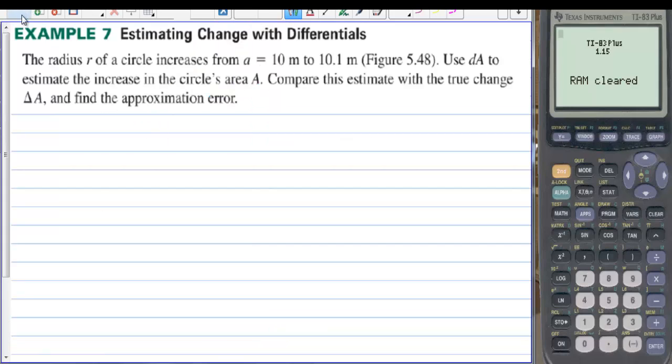Well let's look at this mathematically. Estimating change with differentials. The radius r of a circle increases from 10 to 10.1. Use the derivative of A to estimate the increase in the circle's area, A. Compare this estimate with the true change in A and find the approximation error. We don't usually worry about approximation error.